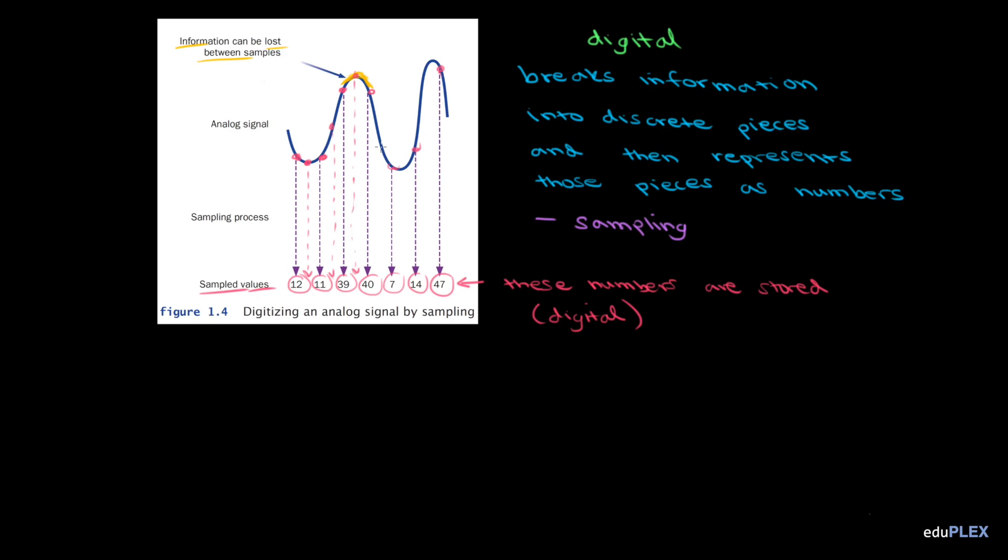The greater the sampling frequency, the closer we get to representing the actual analog signal with digital numbers, and at a certain point, our ears won't be able to tell the difference.